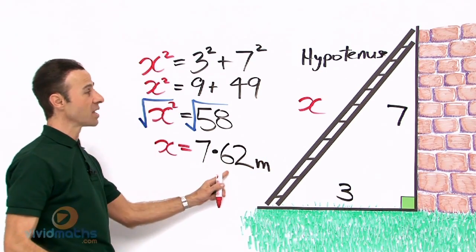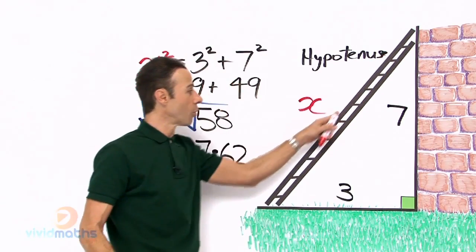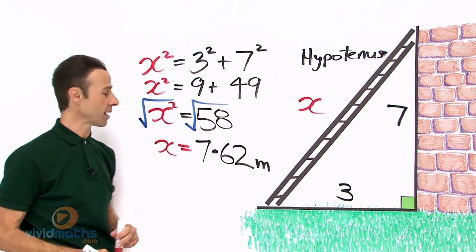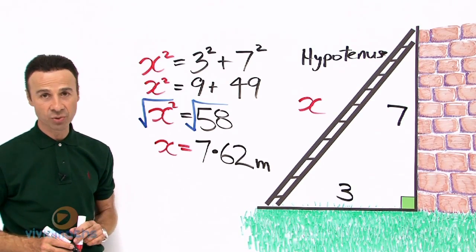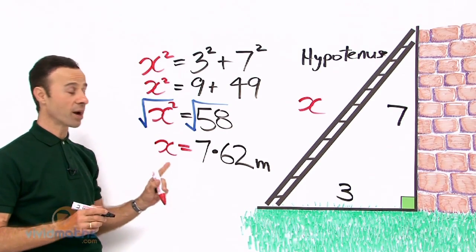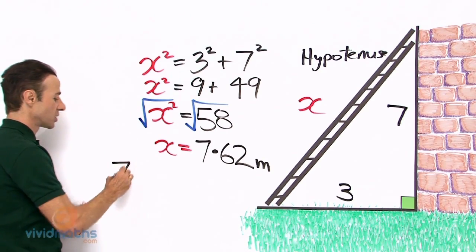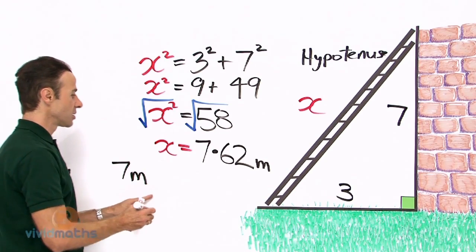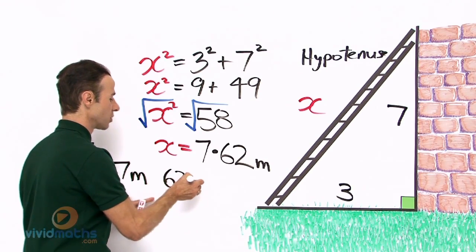And that is the answer for the length along the total of that ladder. So the answer also asks us to write it to the nearest centimeter, so we would write it like this: it is 7 meters 62 centimeters.